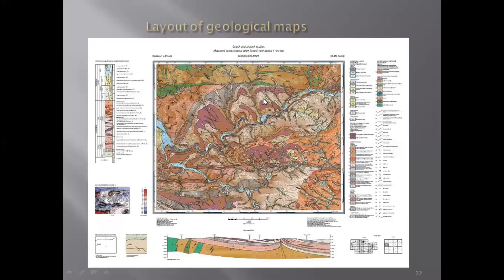A geological map is a colorful sheet with a whole new world of features and information — so much information that it is just like a book. When you produce a field report and then produce a geological map, the map equally describes whatever you have done. Whatever part you covered is explained in the report, but if it is not shown in the geological map, then the report is meaningless.